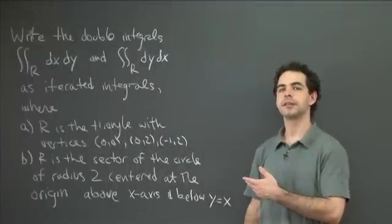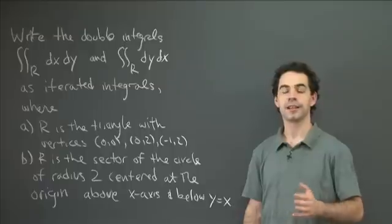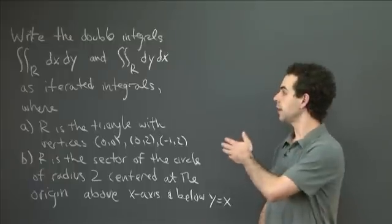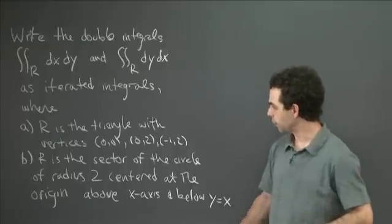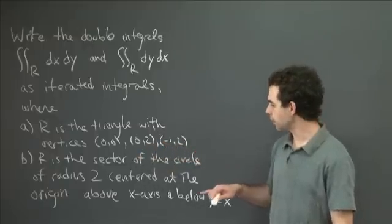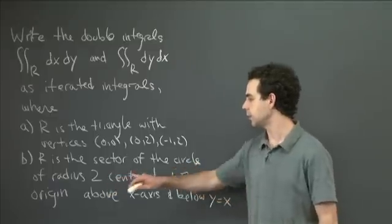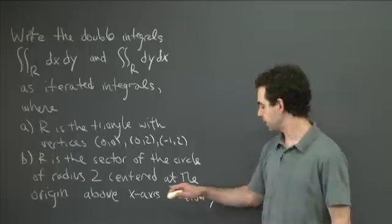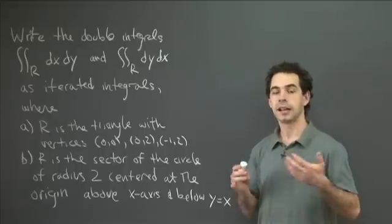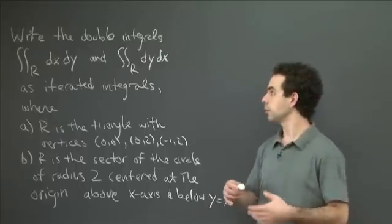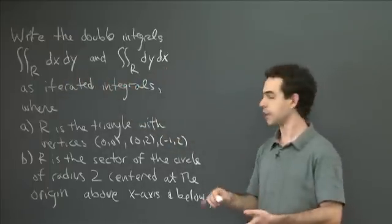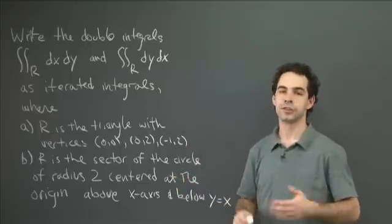Welcome back to recitation. In lecture, you've been learning about computing double integrals, changing the order of integration, and how you can look at a given region and integrate over it by integrating dx dy or dy dx. So here I have two examples: one region is a triangle whose vertices are the origin, the point (0,2), and the point (-1,2). The other is a sector of a circle of radius 2 centered at the origin — specifically the part above the x-axis and below the line y equals x. I'd like you to write the double integral over these regions as iterated integrals in both orders: dx dy and dy dx.